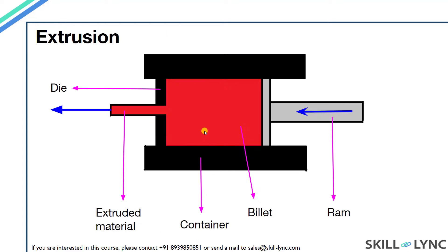In the extrusion process, the material is placed inside a container. A ram forces this material through a die to acquire the desired shape. Pipes and window panes are usually made using the extrusion process.